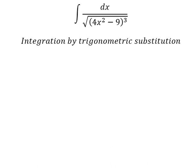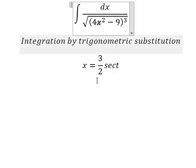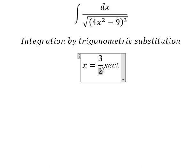So I will put x equals 3 over 2 secant of t, because if I put this one here, we have 9 over 4 secant squared t. Number 4 and number 4 we cancel, number 9 and number 9 we can do factorization.